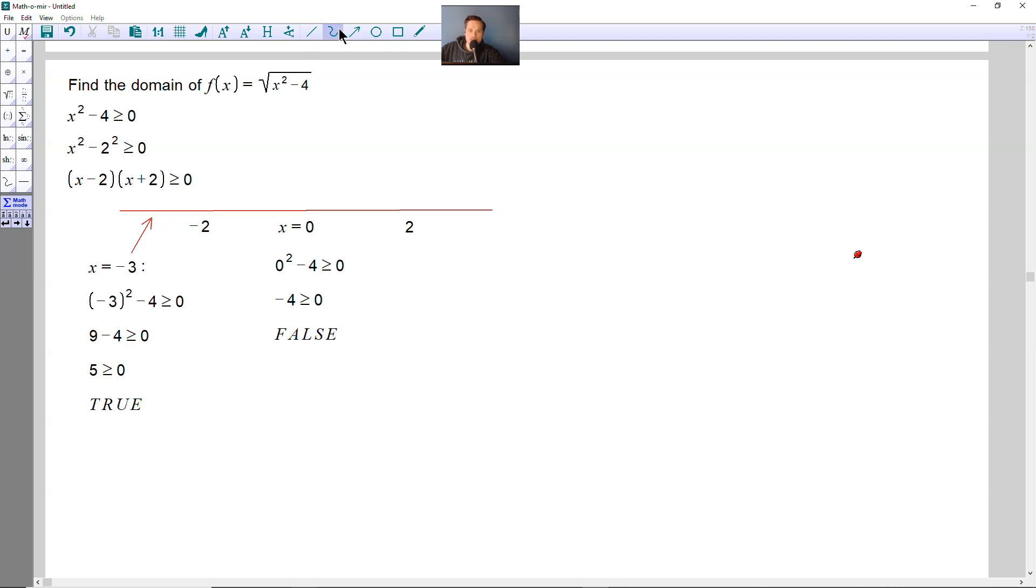All right, and then all the way on this side now, over here, I'm going to choose a sample value like x equals positive 3. So when I work with it, it's going to give me 3 squared minus 4 is greater than or equal to 0. So that's 9 minus 4 is greater than or equal to 0. That's 5 greater than or equal to 0, which is clearly true.